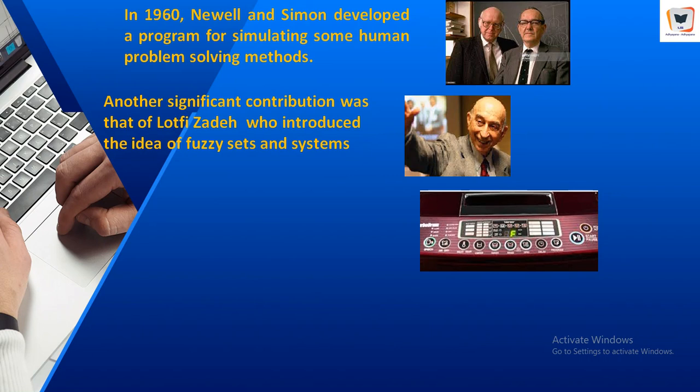Other than these examples, the 1960s was perhaps a time of some foolhardy claims regarding the potential of AI to copy and even recreate the entire working of the human brain within a very short space of time.